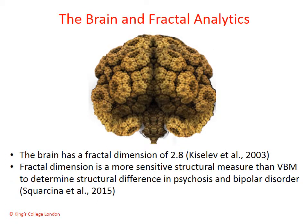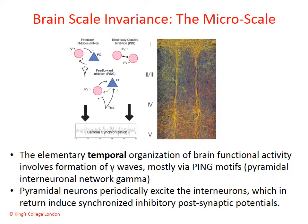Let's talk about the brain then. The brain is a fractal object and has a fractal dimension of 2.8, as it has been measured a few times. In disease, this dimension changes. And fractal geometry has been demonstrated as a far more sensitive tool than classic geometry to measure differences in brain structures in disorders such as schizophrenia or bipolar disorder. Okay, that is for the structure, but what about the function, which is something we are really interested in?